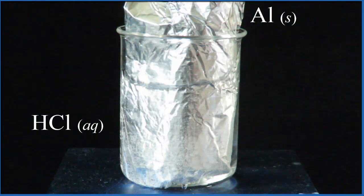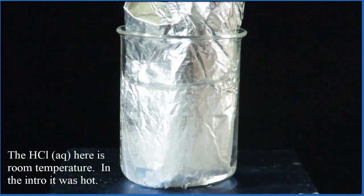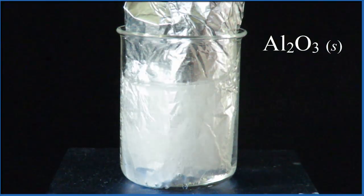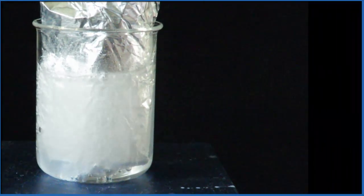We put the aluminum in the hydrochloric acid and nothing happens right away. That's because aluminum is coated by aluminum oxide, Al2O3. Once we break through that aluminum oxide barrier, the reaction starts. It's a single displacement reaction - the aluminum replaces the hydrogen, so we should end up with aluminum chloride and hydrogen.